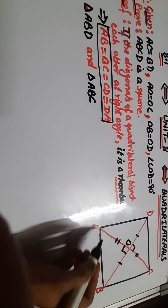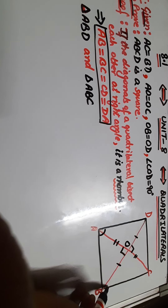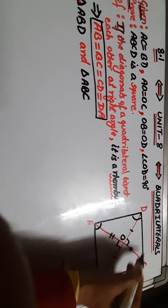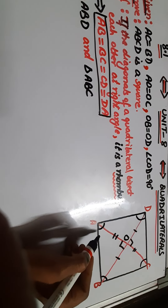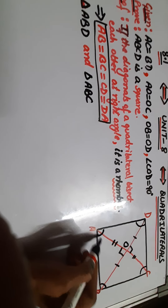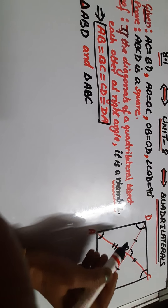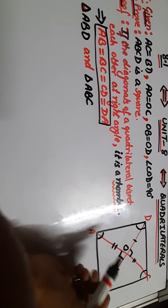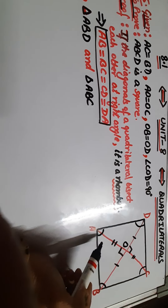So we have to prove that all four angles are equal. I have told you that when you have adjacent angles and sides are equal, then we have to use adjacent triangles. So we have to take two adjacent triangles. We have to take triangle ABD.